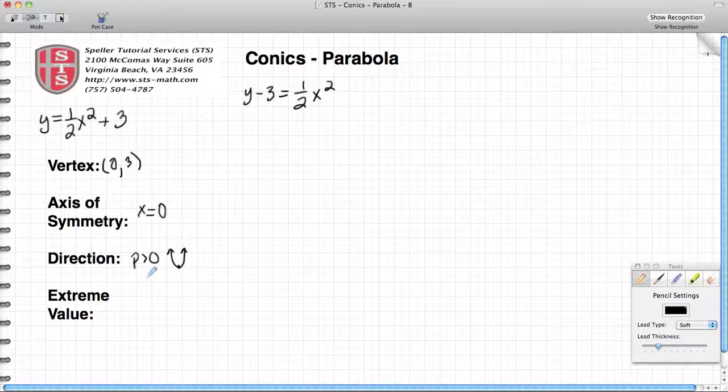Lastly, our extreme value since it opens up is going to have a minimum value, and that minimum value is going to be a y value that is equal to the y value that we found for the vertex. In this case, y is equal to 3. Now to better understand some of the intercepts if they exist for this particular function.